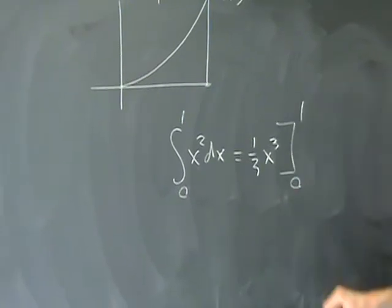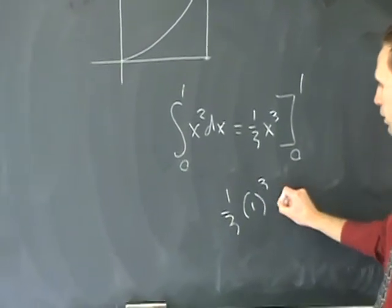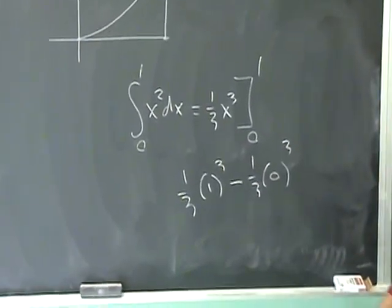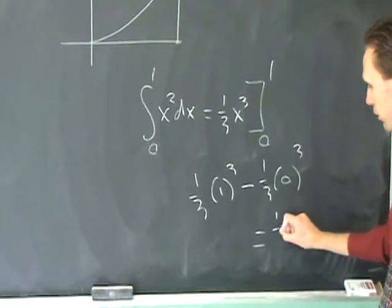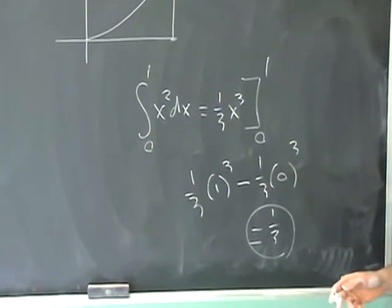Using the bar notation, I will write 0 to 1, which means one-third one cubed minus one-third zero cubed, which simply equals one-third. And it's just that easy. The area is one-third.